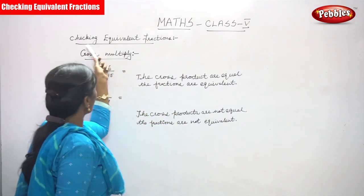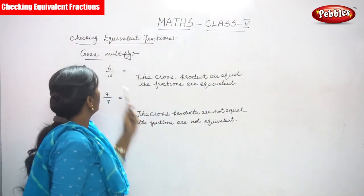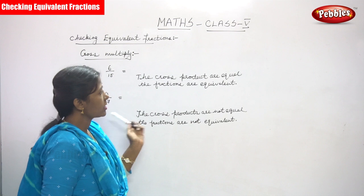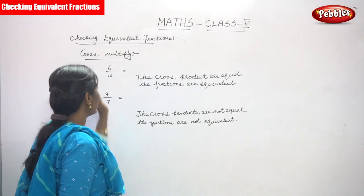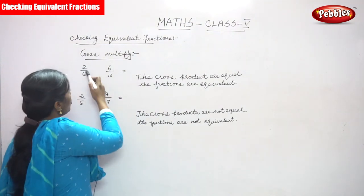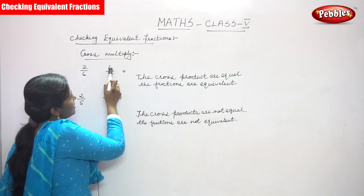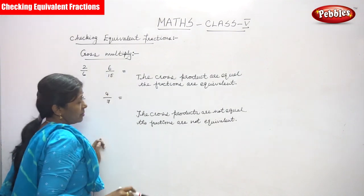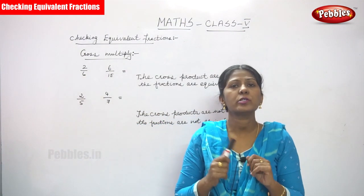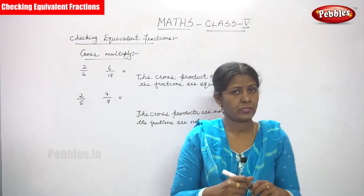We are going to see how to check using cross multiplication. What is cross multiply? Now I am going to teach cross multiply. So 2 by 6 and 5 by 15 — these are the two given fractions. We are going to cross multiply these fractions.